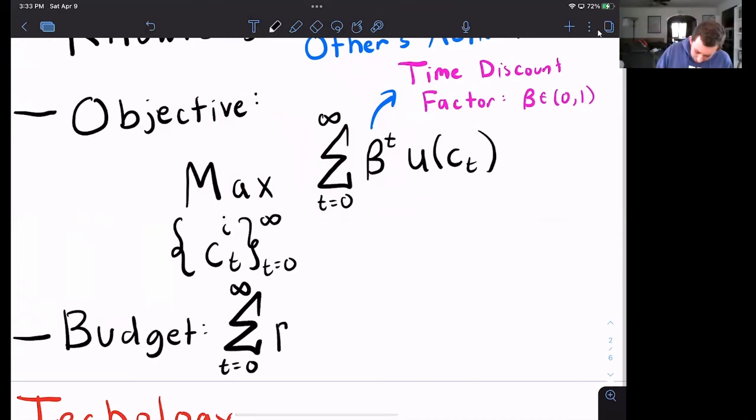Same thing here. This is going to be P_t times E_t_i. That has to be greater than or equal to what I spend.